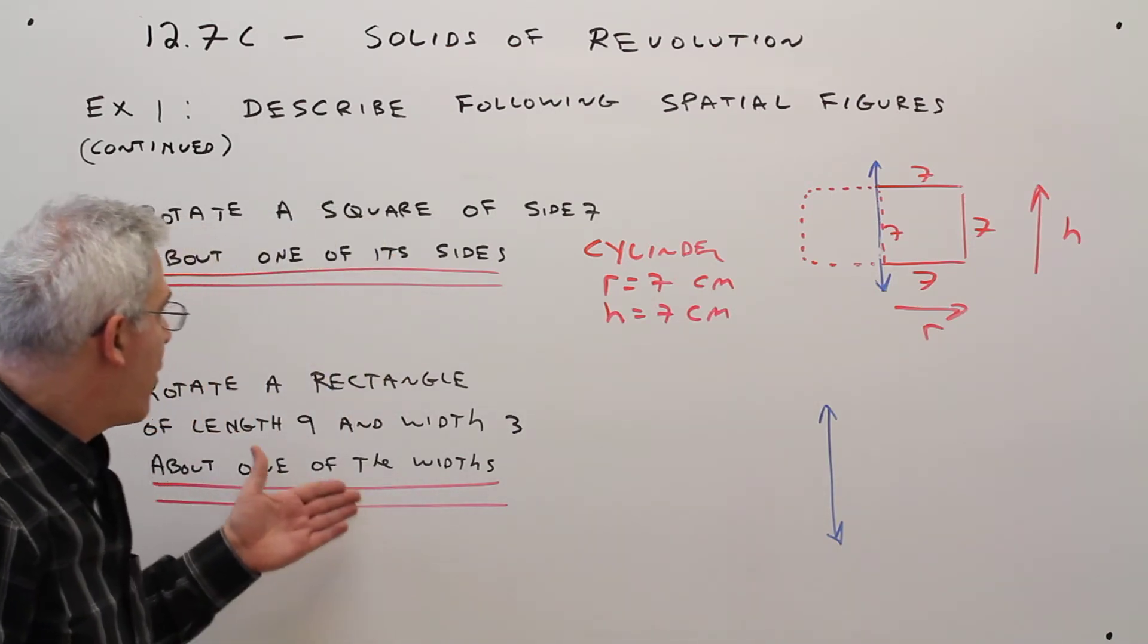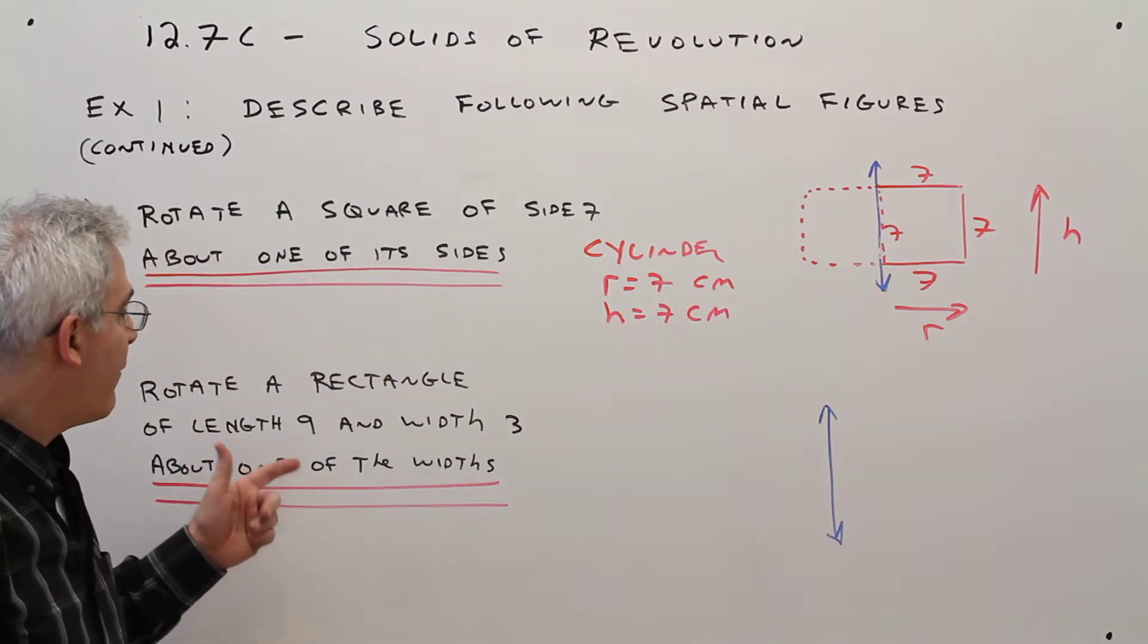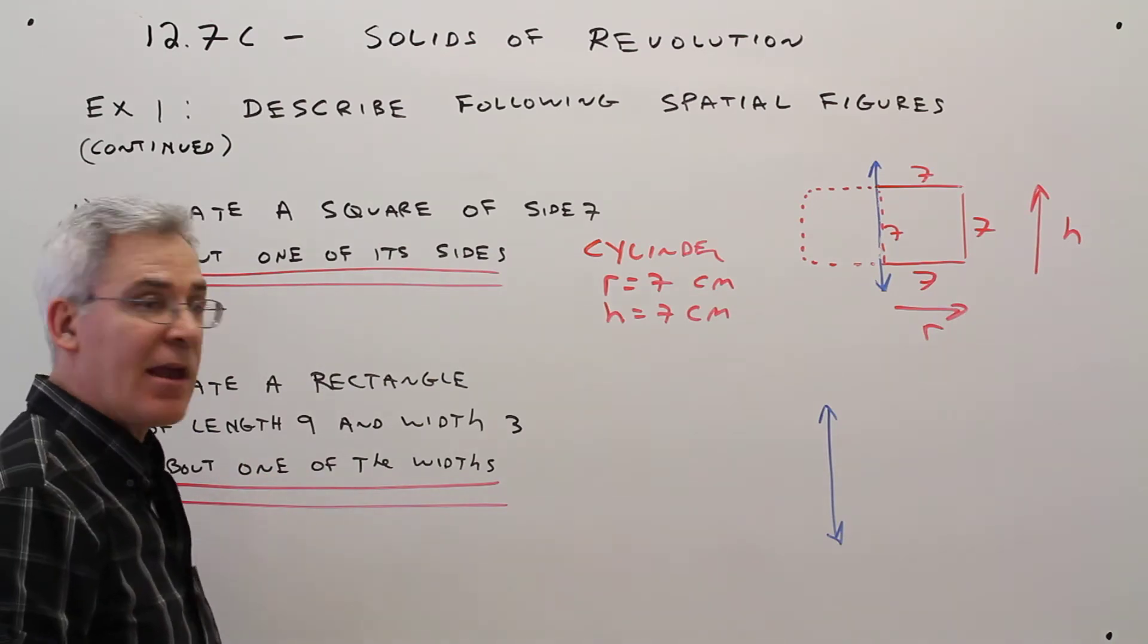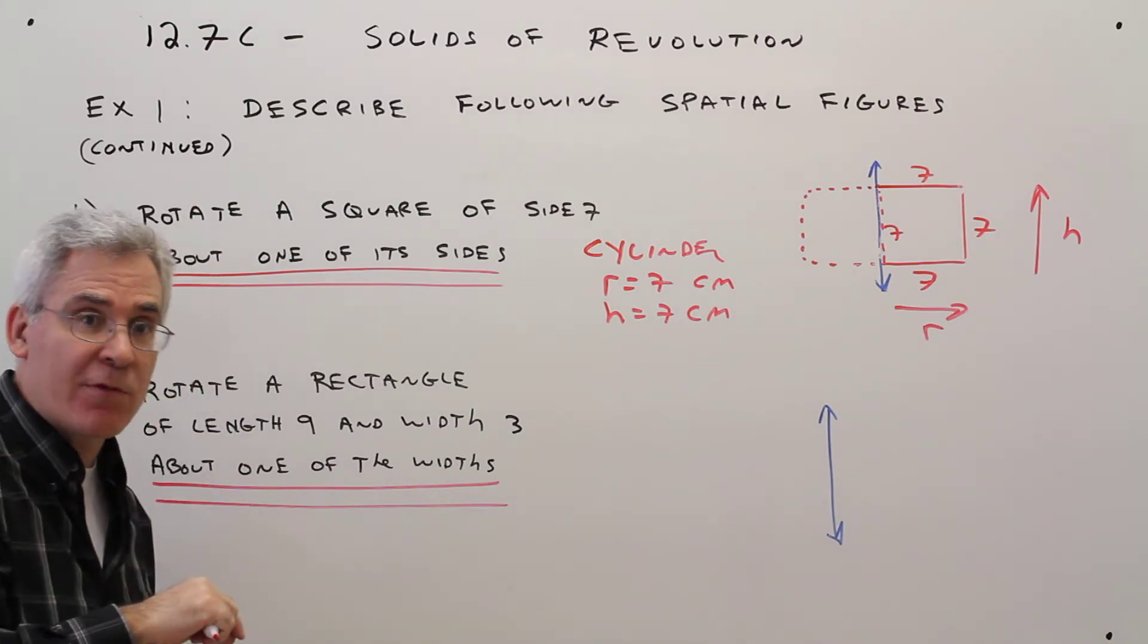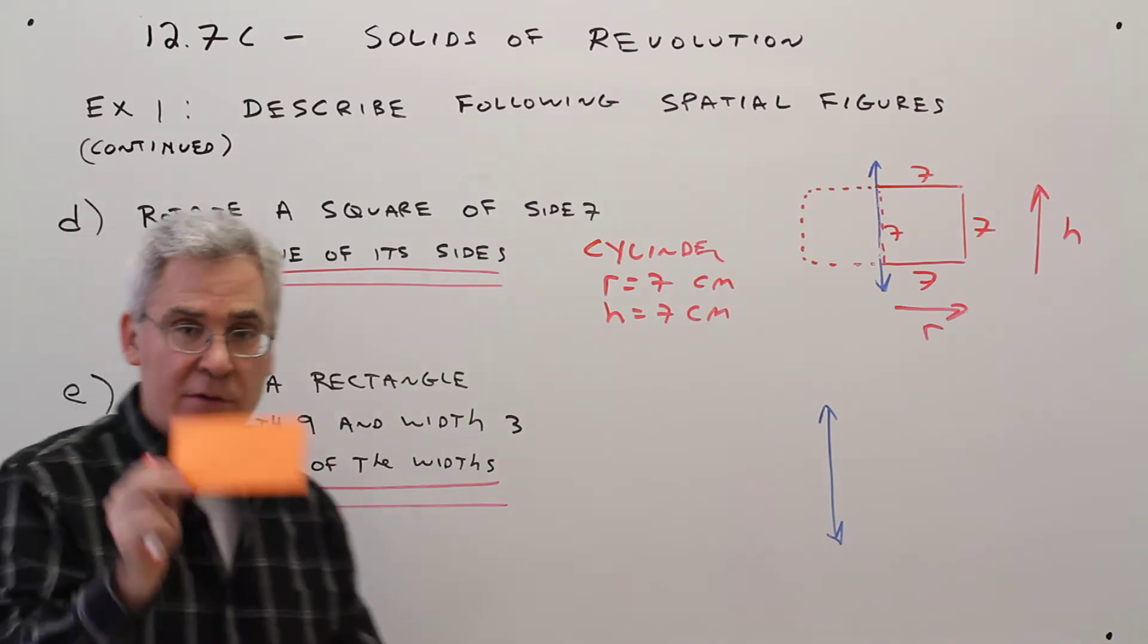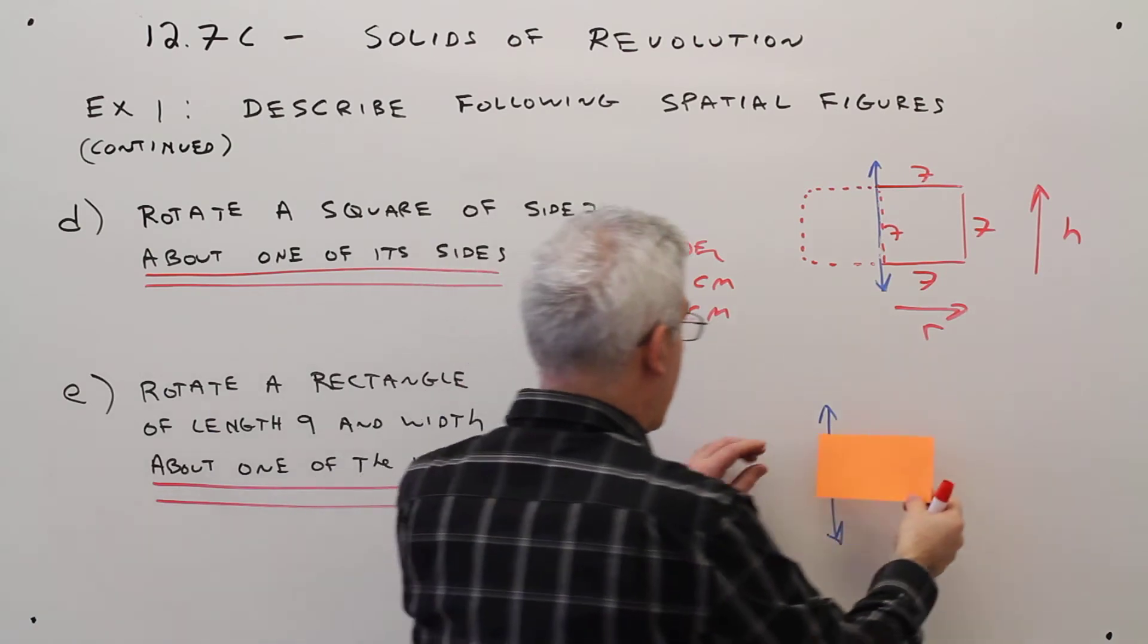The second problem, rotate a rectangle of length 9 and width 3 about one of the widths. And I think it's important that you know you're rotating about one of the widths. That changes the whole problem. So here's a cutout of a possible rectangle.